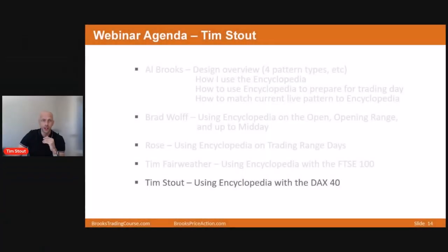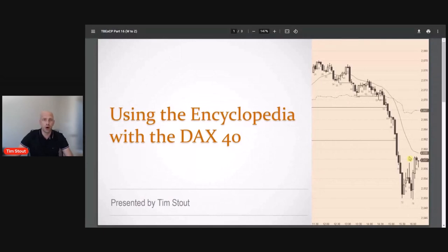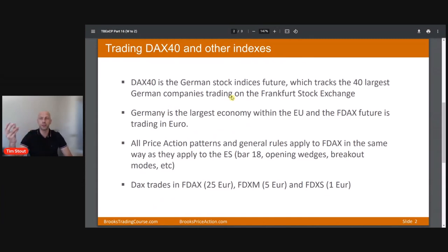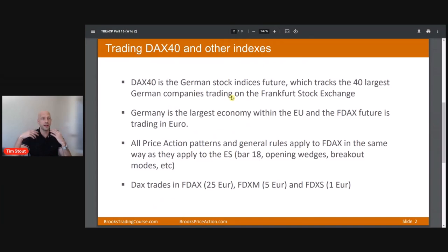The DAX40 is the German index. The FDAX is the future on the German stock exchange, and the DAX40 is the biggest Euro-nominated index in Europe. It trades in Euro, whereas the FTSE trades in British pounds. Price action patterns as you learn them in the course — bar 18 rule, opening wedges, an open that quickly runs to support or resistance — all of those standard rules and methods apply to trading another index, even in another time zone.